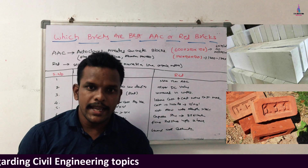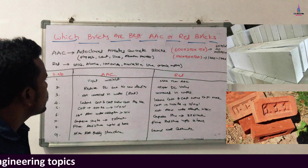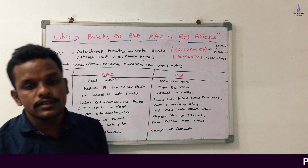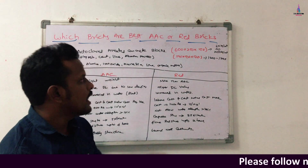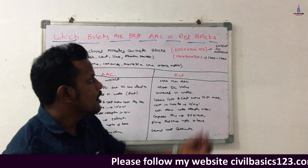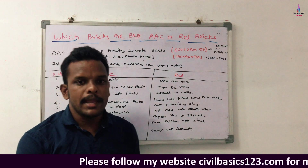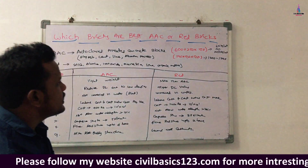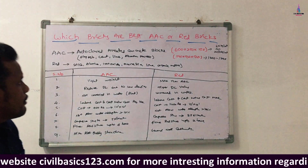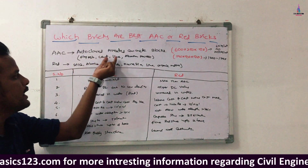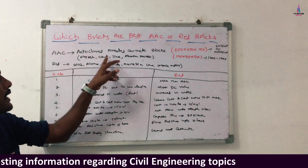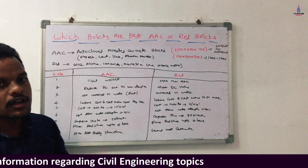AAC stands for Autoclaved Aerated Concrete blocks. These blocks are available in the market with dimensions of approximately 600 mm x 250 mm x 150 mm. The composition of materials in AAC blocks includes fly ash, cement, lime, and aluminium powder. These four materials are the basic composition of AAC blocks.